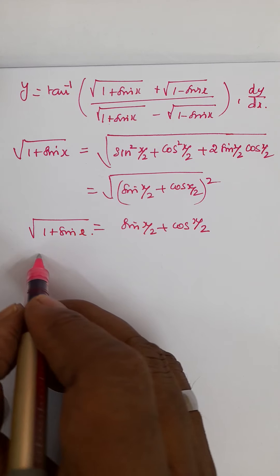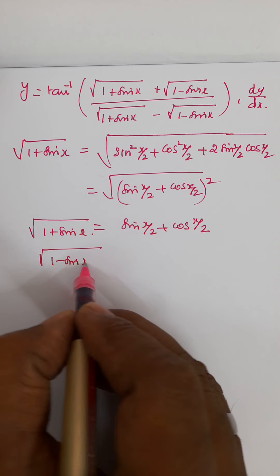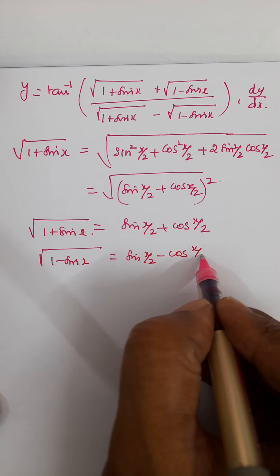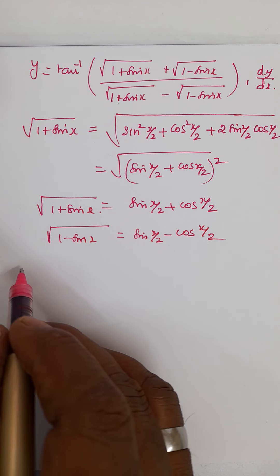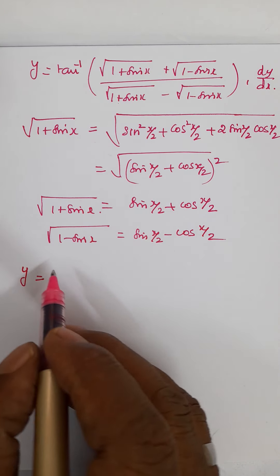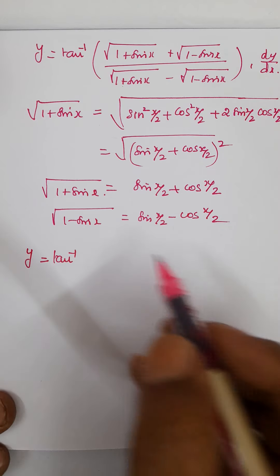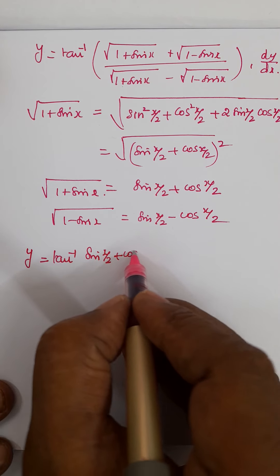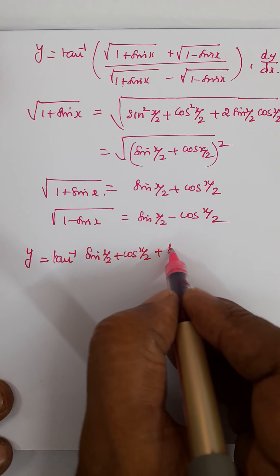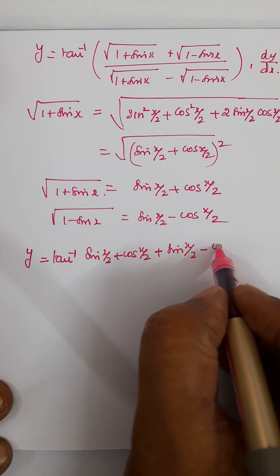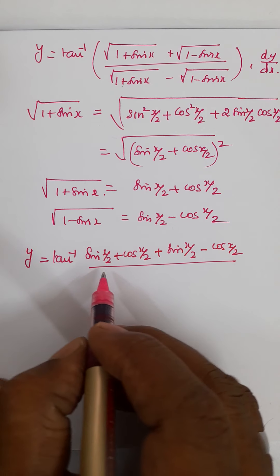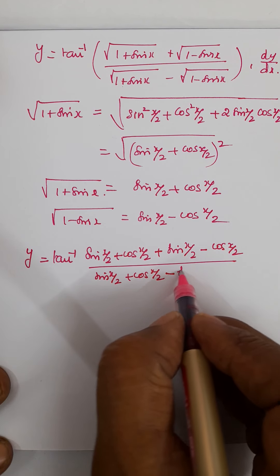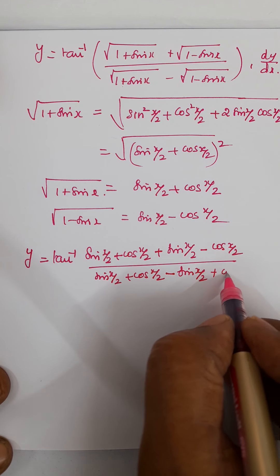Similarly, root of 1 minus sin x is nothing but sin x by 2 minus cos x by 2. Now applying all these results, y equals tan inverse of: numerator is sin x by 2 plus cos x by 2 plus sin x by 2 minus cos x by 2, and denominator is sin x by 2 plus cos x by 2 minus sin x by 2 plus cos x by 2.